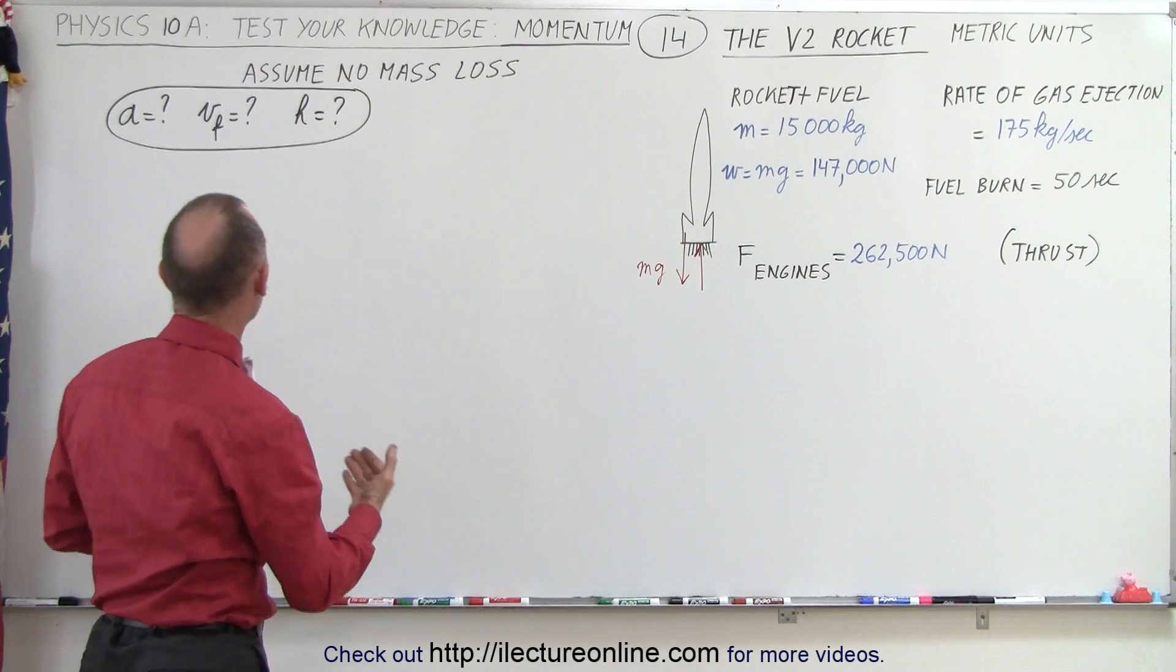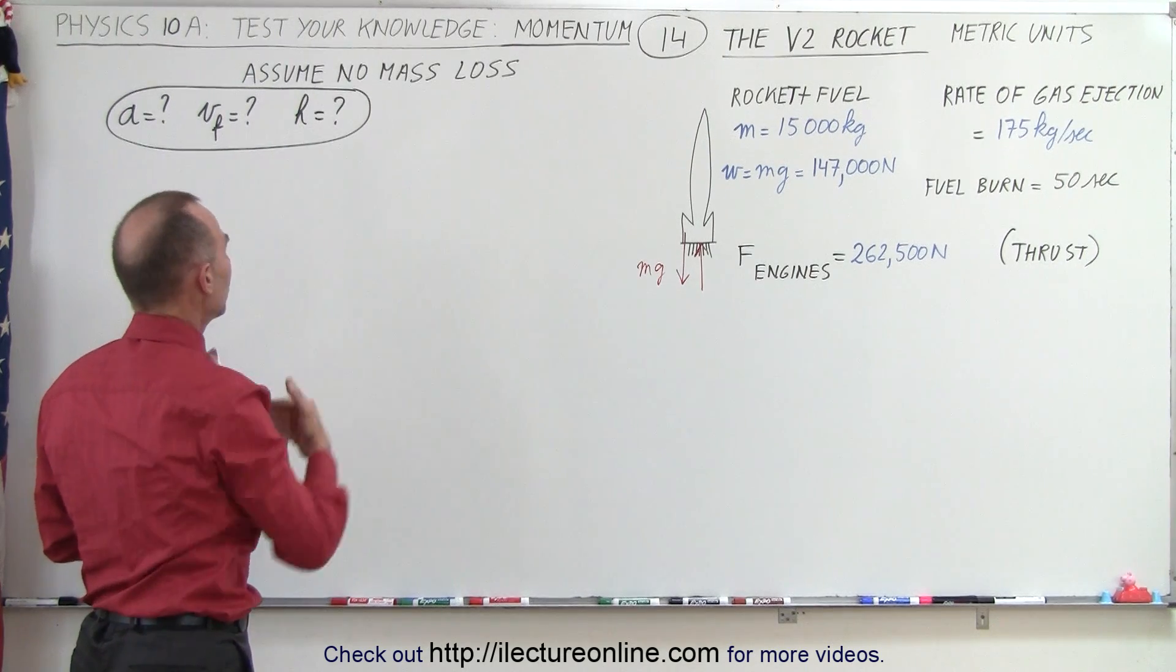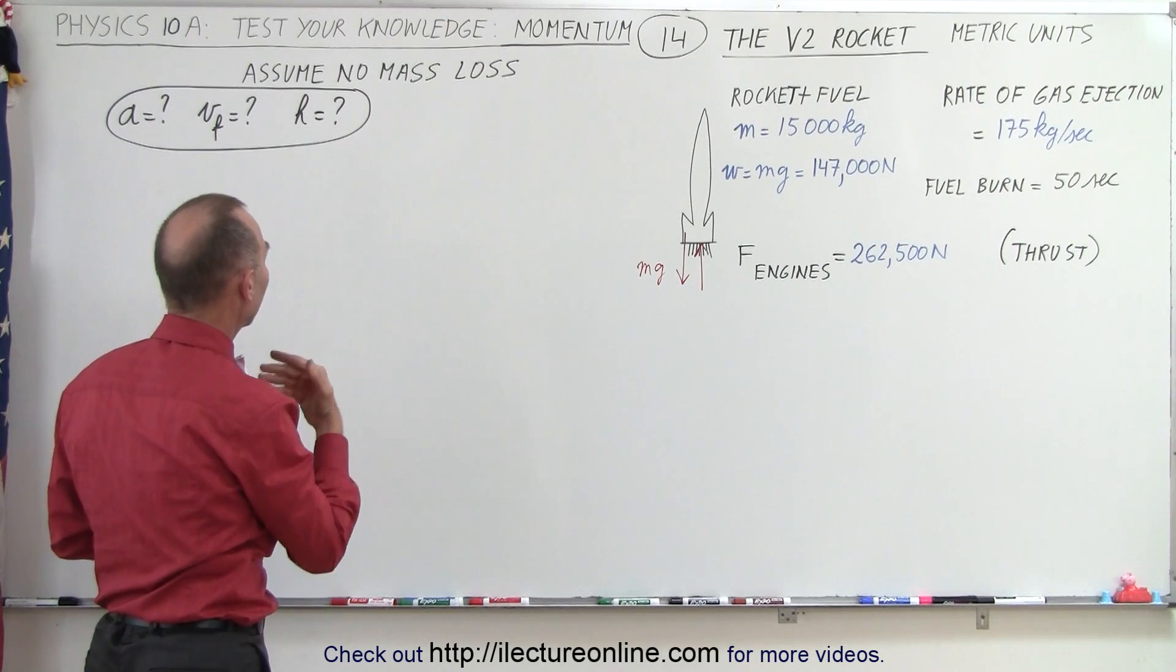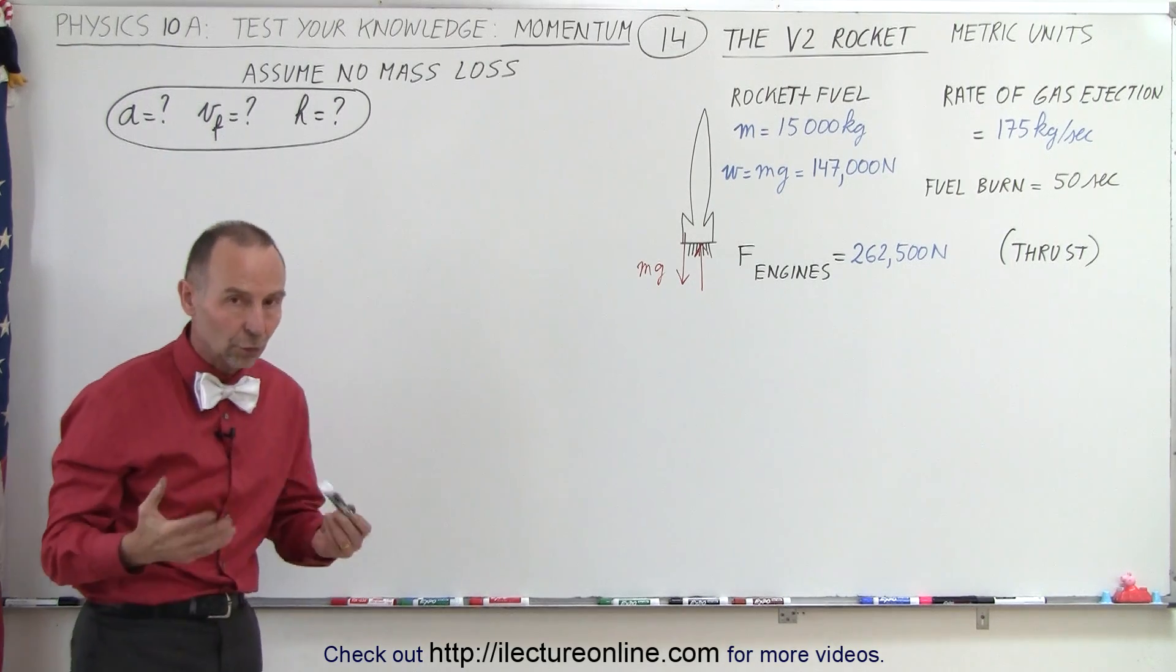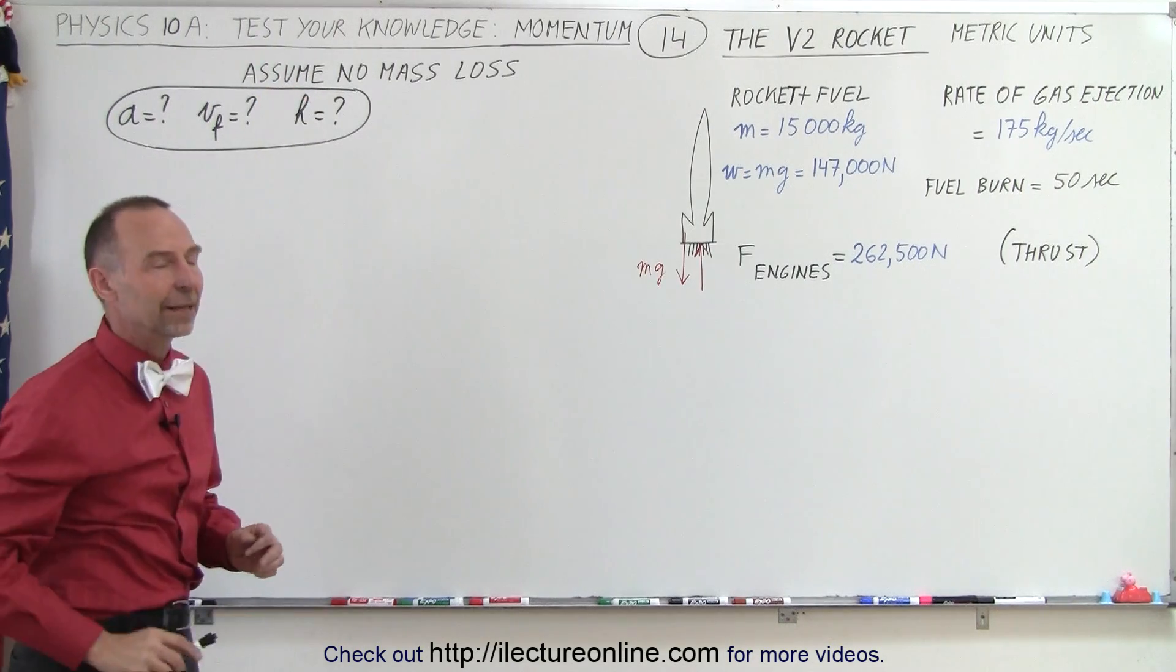So the question then is, what is the acceleration of the rocket, what is the final velocity when the fuel burns out, and what is the height gain, the total height gain by the rocket, assuming that it goes straight up and comes straight back down.